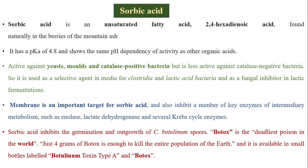The cell membrane is an important target for sorbic acid. It also inhibits a number of key enzymes of intermediary metabolism such as enolase, lactate dehydrogenase, and several Krebs cycle enzymes. Sorbic acid inhibits the germination and outgrowth of Clostridium botulinum spores. Botulinum toxin is considered the deadliest poison in the world; just 4 grams of botox is said to be enough to kill the entire population of the Earth.